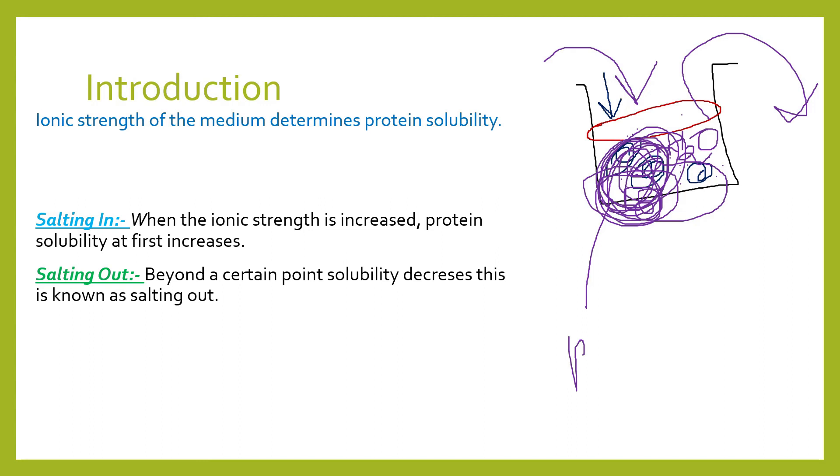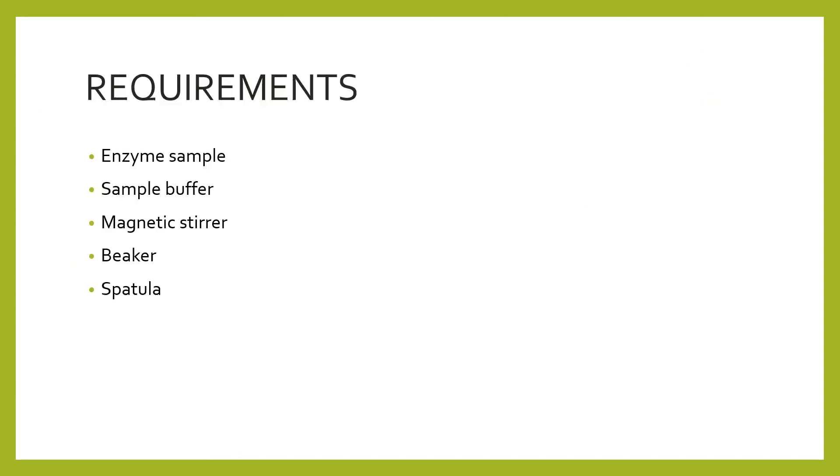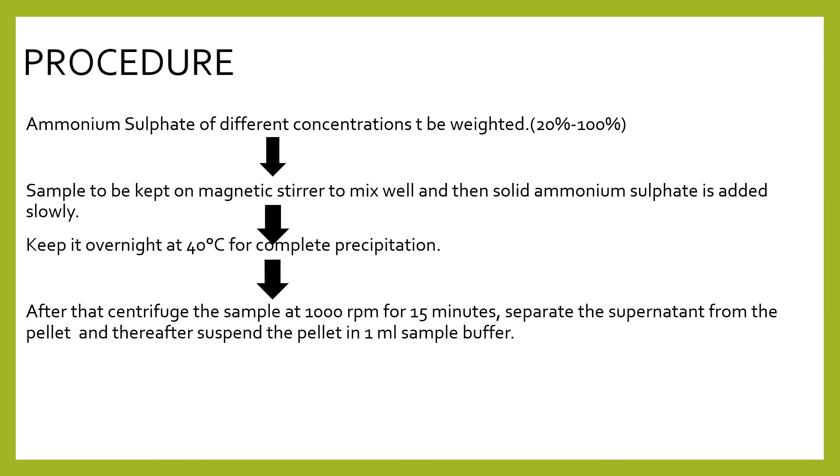Now, what are the requirements? Enzyme sample, sample buffer, magnetic stirrer, beaker, and spatula. Procedure: ammonium sulfate of different concentrations to be weighed, that is 20% to 100%. Sample to be kept on magnetic stirrer to mix well, and then solid ammonium sulfate is added slowly. Keep it overnight at 40 degrees Celsius for complete precipitation.